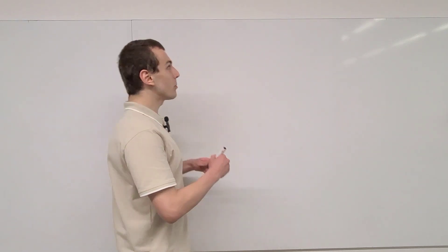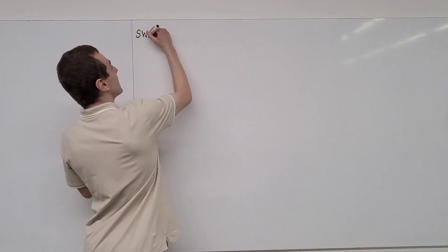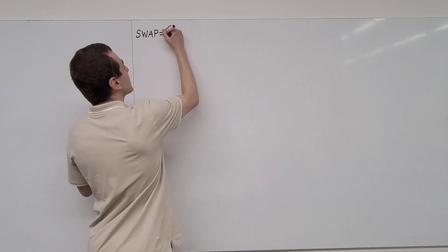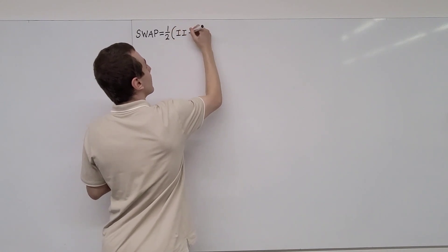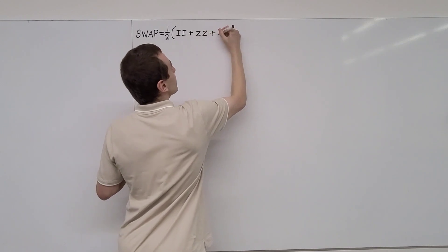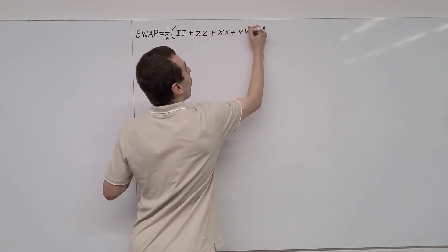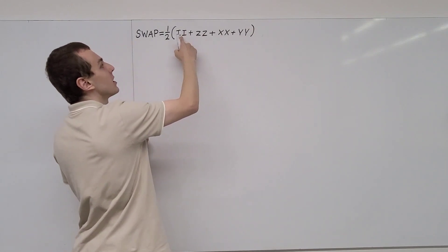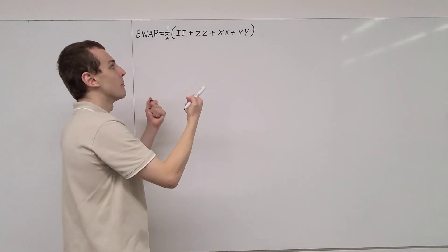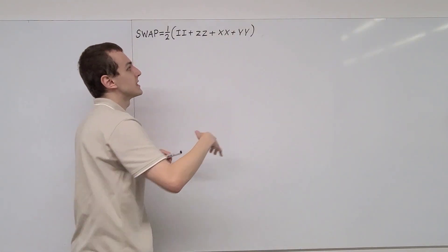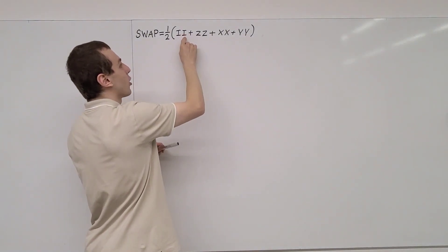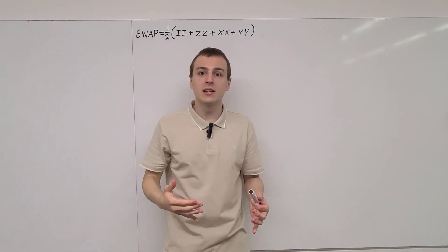Let's investigate the matrix representation of the swap gate. The swap gate can be expressed as a linear combination of Pauli matrix tensor products. We're going to have the terms denoted by II, ZZ, XX, and YY. This is shorthand notation for the tensor product of Pauli matrices, where I, Z, X, and Y are the standard Pauli matrices and identity operator for a single-qubit Hilbert space.